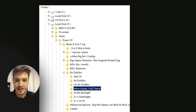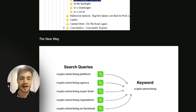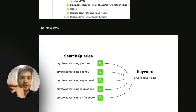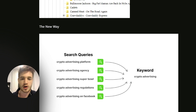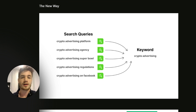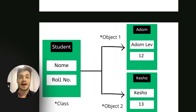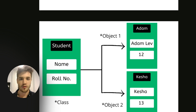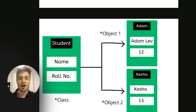Dataview is a way to solve that problem. Instead of a folder structure, with Dataview you can essentially query a specific type of note from anywhere in your vault and it will return all the notes that match that criteria so you can interact with them. For example, you could search for 'crypto advertising' as a keyword and it returns those notes. Another example: if you have students, you could create a main note called 'student' and it returns individual notes labeled as students — like Adam and Kesha both falling under the student class.